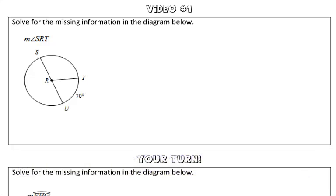In this problem, we are asked to solve for the missing information in the diagram below. So what we are looking for is the measure of angle SRT. Well, in order to find the measure of angle SRT, we could find the measure of arc ST.